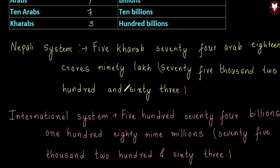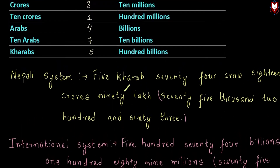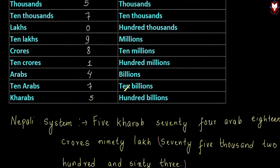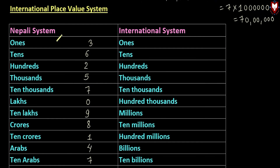In the Nepali system and international system they share the number of millions as a comparison point. We will discuss the number with example 5,865,242 to further illustrate the differences between the two systems.